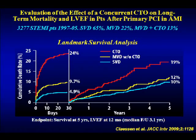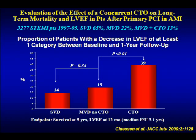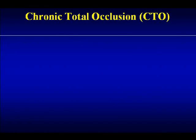Very interesting data from the Netherlands: patients who have CTO at the time of MI — from 3,300 STEMI patients, where 22% had multivessel disease and 13% had a CTO with multivessel disease — showed that the presence of CTO not only increased 30-day mortality but even at 5 years imparted bad prognosis. This was largely mediated by LV function — people with a CTO will continue to deteriorate their LV function. CTO is therefore a strong and bad prognostic factor.